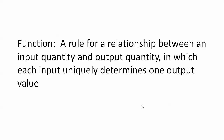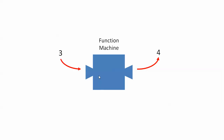You can almost think of this as a vending machine. If you go to a vending machine and you press the button for Snickers, you're expecting to get Snickers out. If something else were to come out, that would be a pretty weird machine. So imagine this machine here — we feed a 3 into the function, it does some kind of calculations or lookup or something, and it spits out a 4.